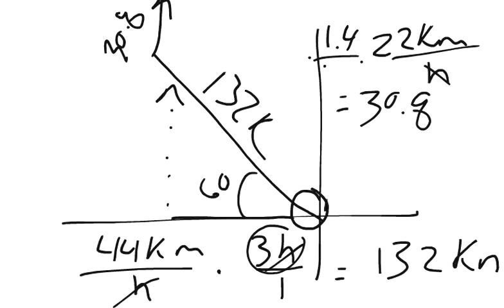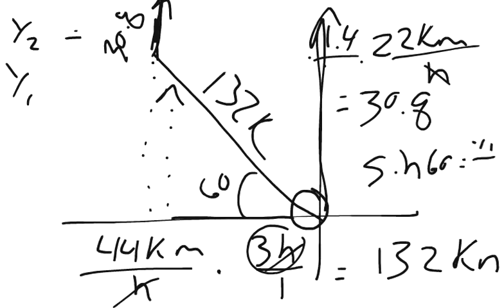This is good because we know this is our y-axis. This is only going on the y-axis, not moving at all on the x-axis. So y2 equals 30.8. What does y1 equal? We can say that sine of 60 degrees equals y1 over 132. That ends up being y1 equals 114.32.